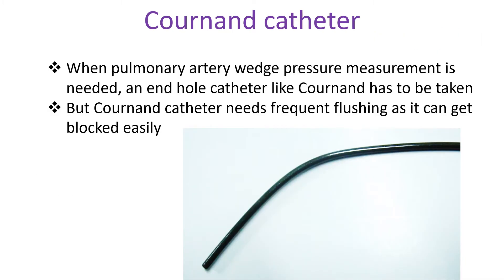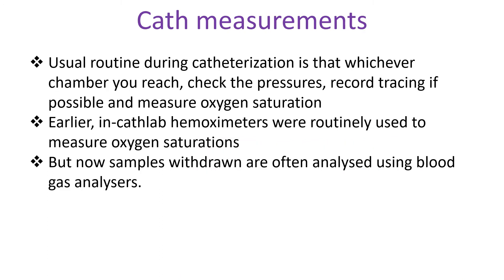When pulmonary artery wedge pressure measurement is needed, an end hole catheter like the Conan catheter has to be used. The Conan catheter needs frequent flushing as it can get blocked easily. The usual routine during catheterization is that whichever chamber you reach, check the pressures, record the tracing if possible, and measure oxygen saturation. Earlier, in the catheter lab, hemoximeters were routinely used to measure oxygen saturation, but now samples withdrawn are often analyzed using blood gas analyzers.